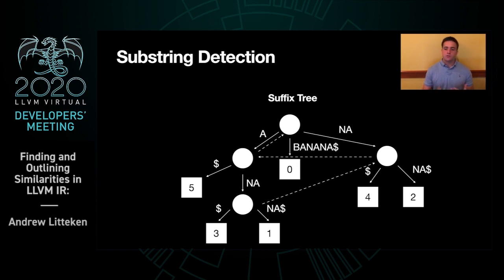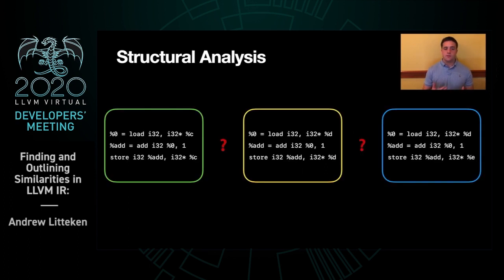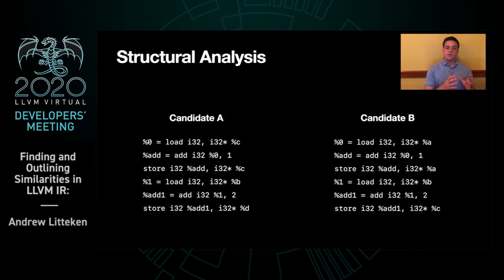If you want a more detailed explanation on how the suffix tree works, Jessica Paquette has a short explainer in her talk about machine outlining in 2016. Now that we have the repeated substrings, it doesn't mean they're performing the same operation. We need to be able to create a one-to-one mapping of the registers from one set of instructions to the other.